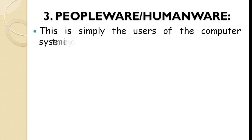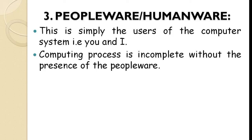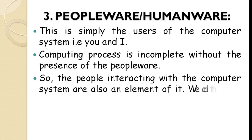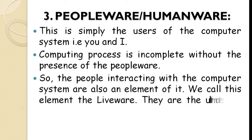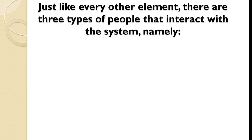Peopleware or Humanware — this is simply the users of the computer system, that is, you and I. The computing process is incomplete without the presence of the Peopleware. Have you ever seen a computer system working from booting level to performing tasks without a command? I believe your answer is no. So, the people interacting with the computer system are also an element of the computer. We call this element the Livewire — they are the ultimate users of the computer systems. Just like every other element, there are three types of people that interact with the system.